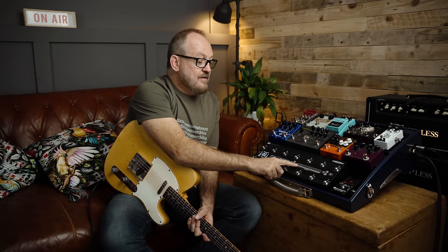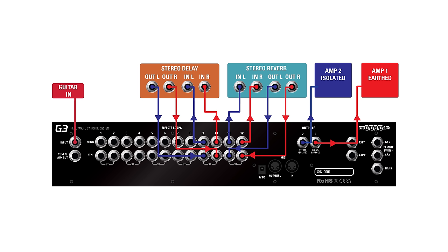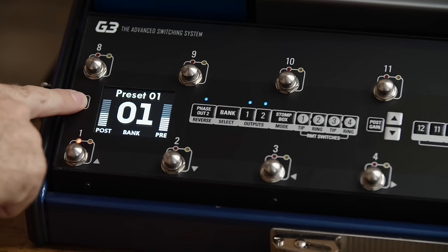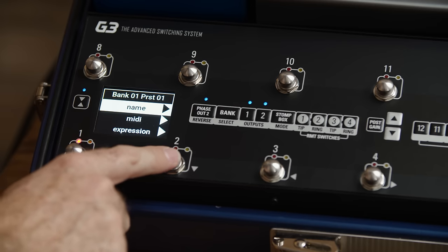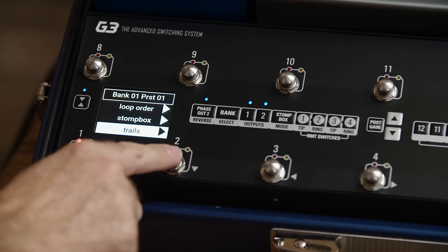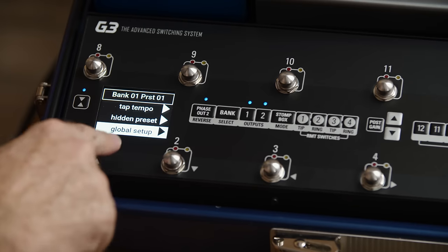You do that by pairing loops. I've got the Mercury 7 by Meris — a great reverb pedal — set up to be stereo in loops 11 and 12. The send from 11 goes into the left input, send from 12 goes into the right input; the left output goes into the return of 11, and the right output into the return of 12. Setting it up as a stereo loop is easy: go into the deep edit button and you'll see the menu list — name, MIDI, expression pedals, loop order, stomp box, trails, parallel, tap tempo, hidden preset, and global setup.